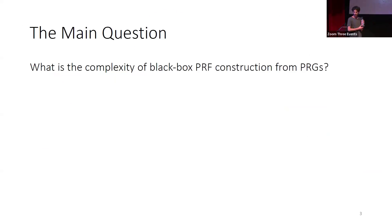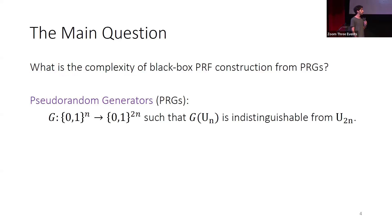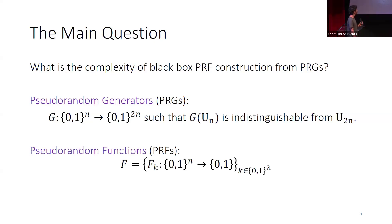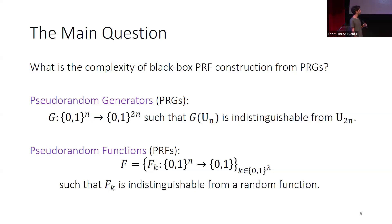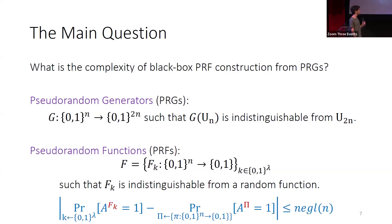The question of this work is: what is the complexity of black-box constructions of pseudo-random functions from PRGs? Let me make sure we're on the same page. Pseudo-random generators, or PRGs, are efficiently computable functions from n bits to 2n bits such that we cannot distinguish between the output of the PRG on a uniform input from truly 2n-uniform bits. A pseudo-random function is a function family indexed by a key k, such that for a random key we cannot distinguish between fk and a totally random function — no efficient adversary can distinguish between an oracle to f or an oracle to a random function.